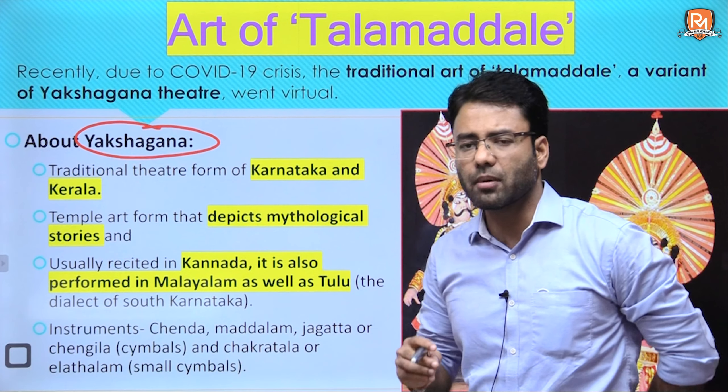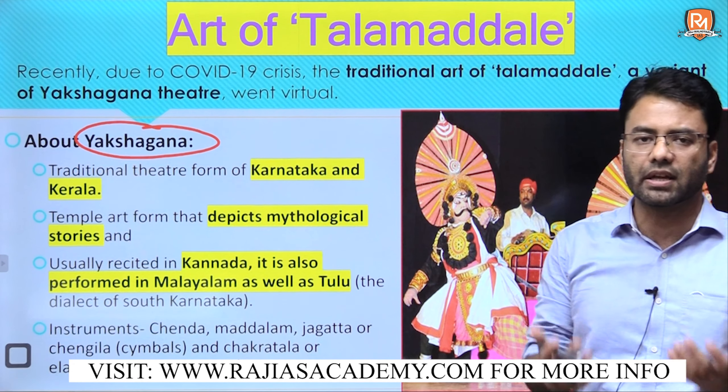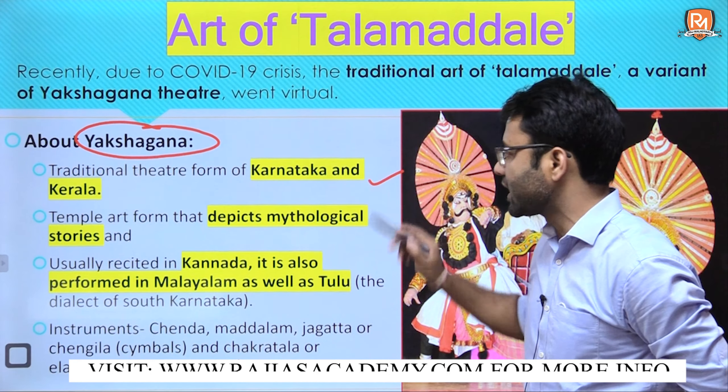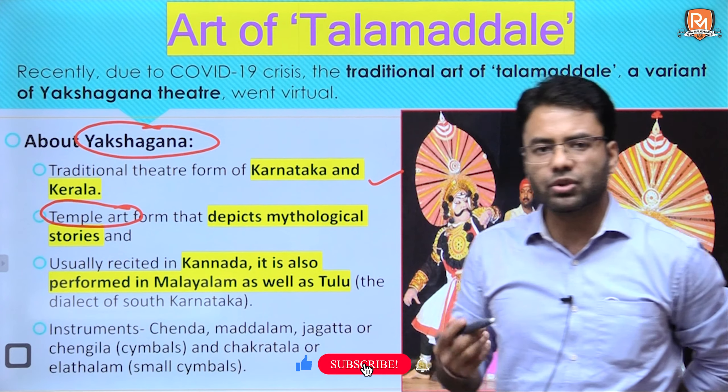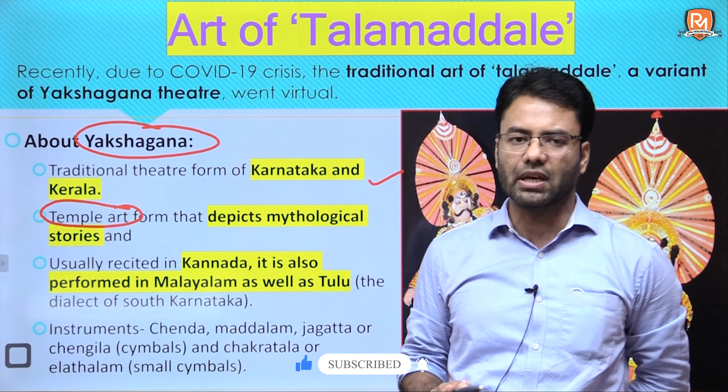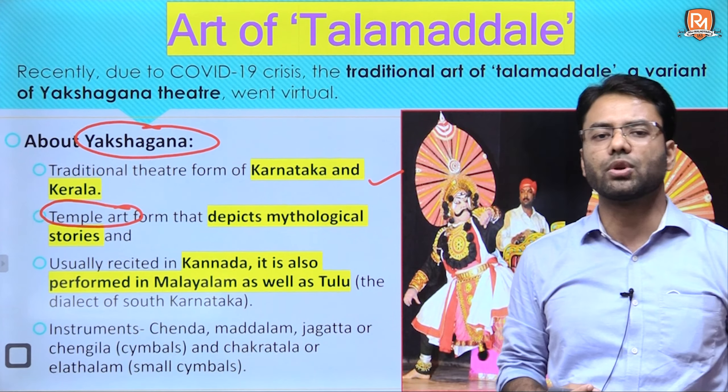Regarding factual points which may be asked in your prelims: the region is Karnataka and Kerala. This art form is associated with temple art — as we commonly know, most traditional art forms, whether music or dance, have their origin or association with temple art. Here also they have association with temple art, and therefore the theme they depict is mythological. Mythological stories are the theme of this dance form and theatre form both.